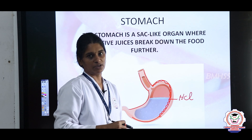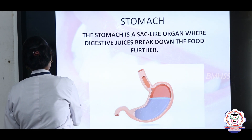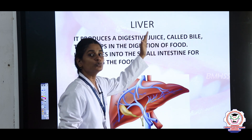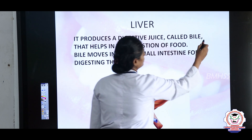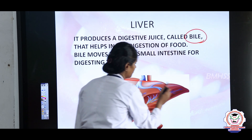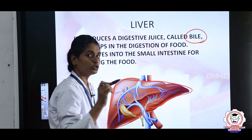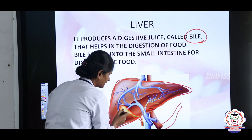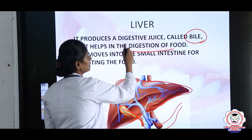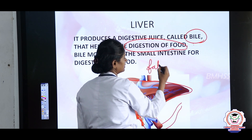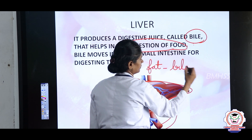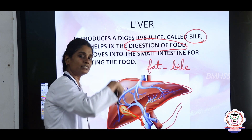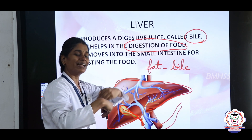The liver produces a juice called bile. This bile is stored in the gallbladder. Once food comes from the stomach, the gallbladder releases bile, which digests the food — particularly fat. Your fat is digested by the bile, which then moves into the small intestine where it mixes with food and digests the fat.